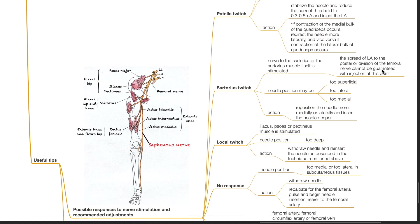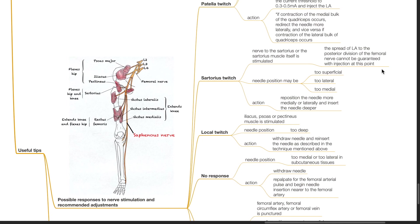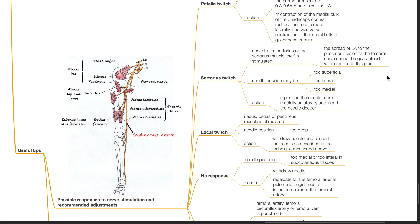Sartorius twitch: the nerve to the sartorius or the sartorius muscle itself is stimulated. The spread of LA to the posterior division of the femoral nerve cannot be guaranteed with injection at this point. The needle position may be too superficial, too lateral or too medial. Action: reposition the needle more medially or laterally and insert the needle deeper.